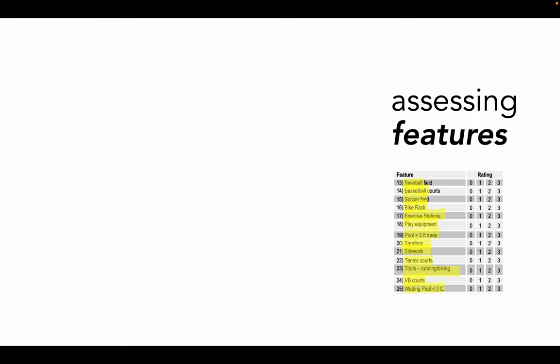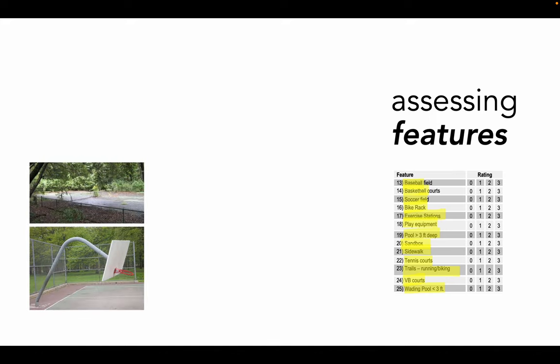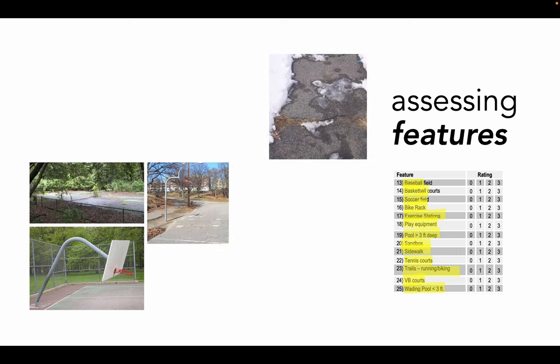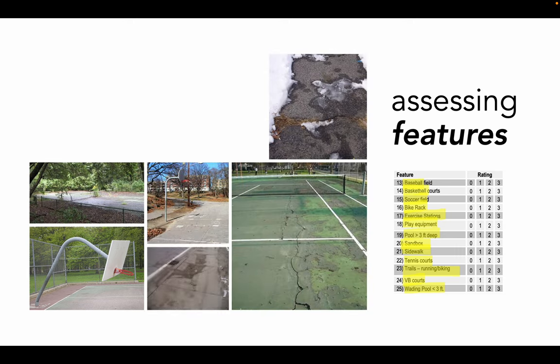If the resources you're assessing are likely to have other kinds of areas for physical activity, you can adapt the tool to list a more likely set of features. In this section, remember that if a feature is present, you're rating the condition or quality with the end goal of assessing its suitability for physical activity. So a poor amenity, rated 1, will be almost unusable, like this overgrown tennis court and this bent basketball hoop. A 2 rating refers to mediocre condition, meaning it's usable but it needs some repair or treatment in order to facilitate use.